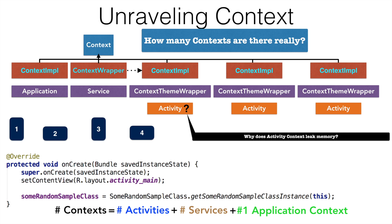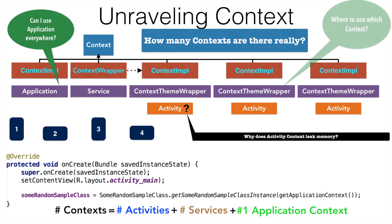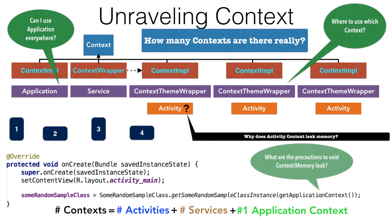We were able to solve this by simply using getApplicationContext(). But does that mean we can use getApplicationContext() everywhere and avoid the memory leak? The answer is no. Then where to use which context, and what are the other precautionary ways to avoid context leaks? These are all very important questions and I shall answer all of them in the next upcoming videos.